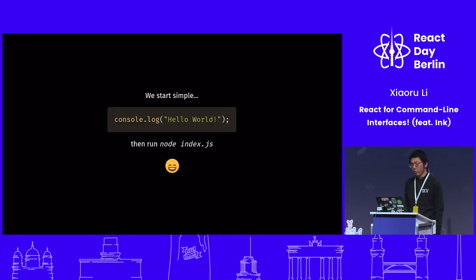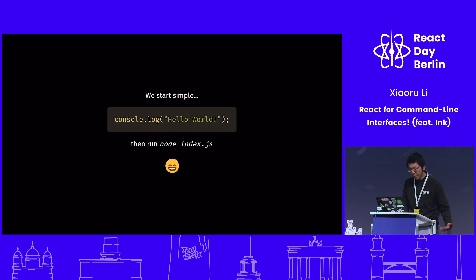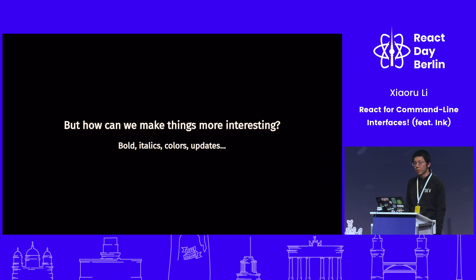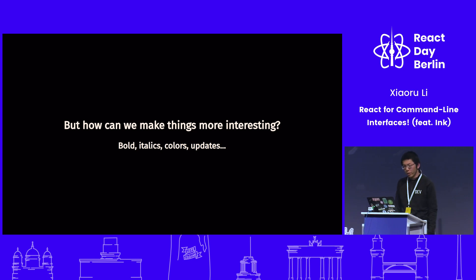So how do we start building command line interfaces with JavaScript? We start with Hello World — just save a line to a .js file and run Node on it, and that's perfect. But if we want to do something more interesting, for example make the text bold, italics, or with colors, it can get tricky.